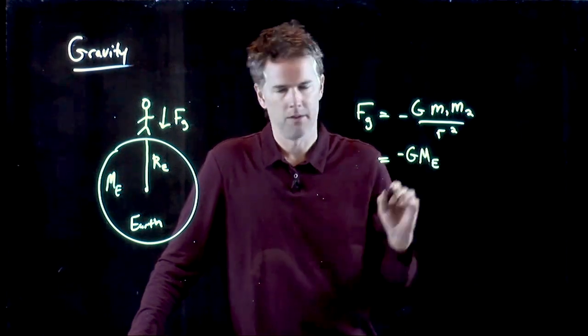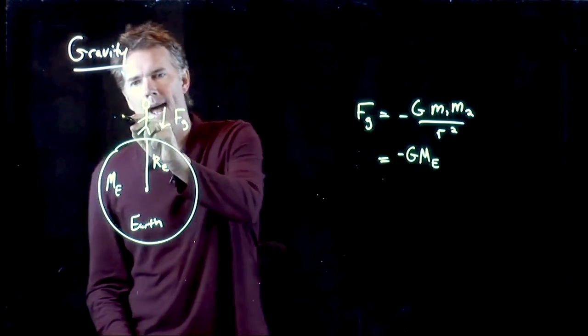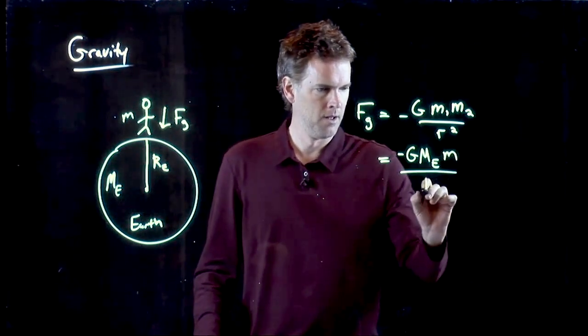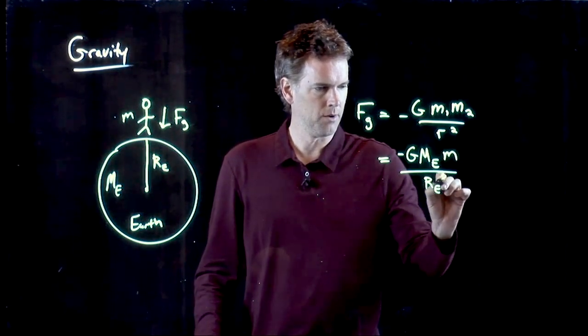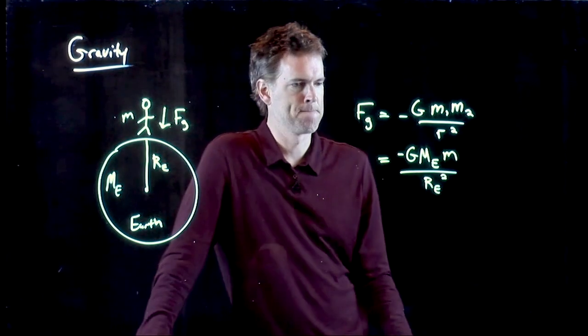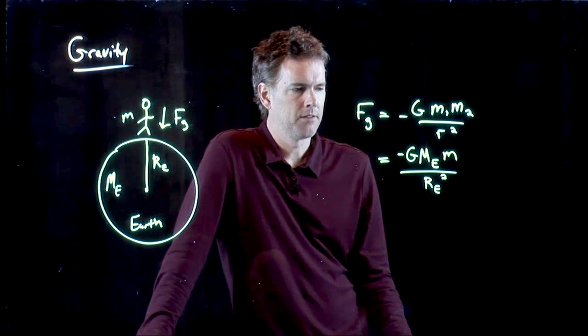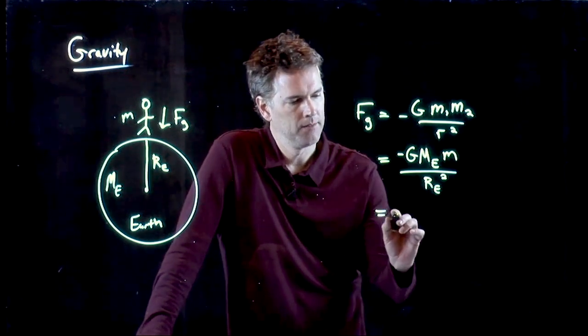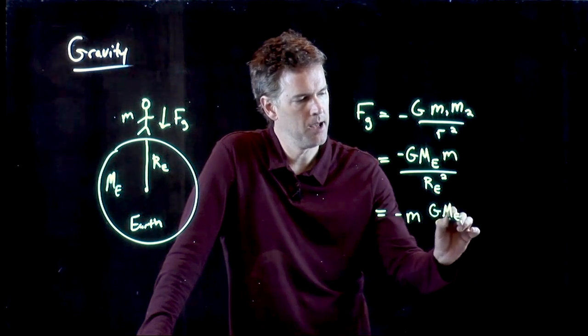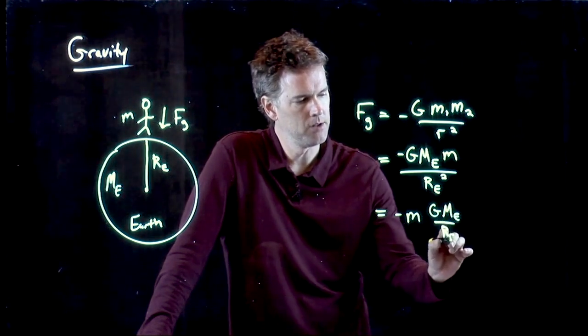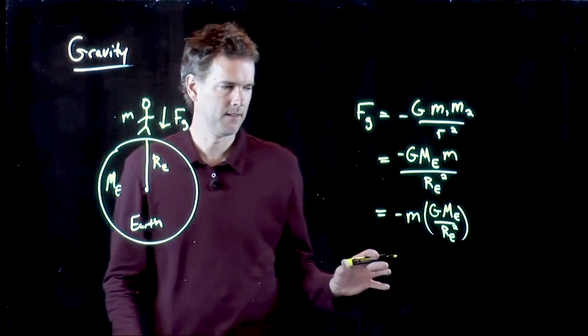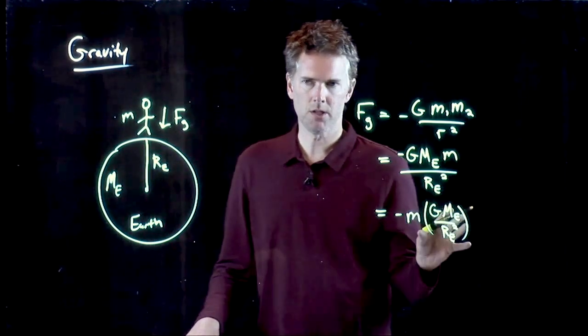Mass of the Earth, there. The mass of us, right there. The radius of the Earth squared, right there. Let's rewrite this slightly and let's put G mₑ over r squared, put all that stuff second. And now let's punch in some of these numbers.